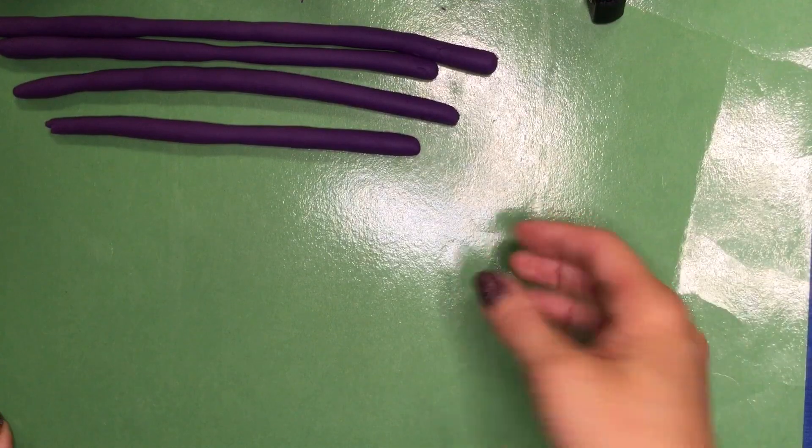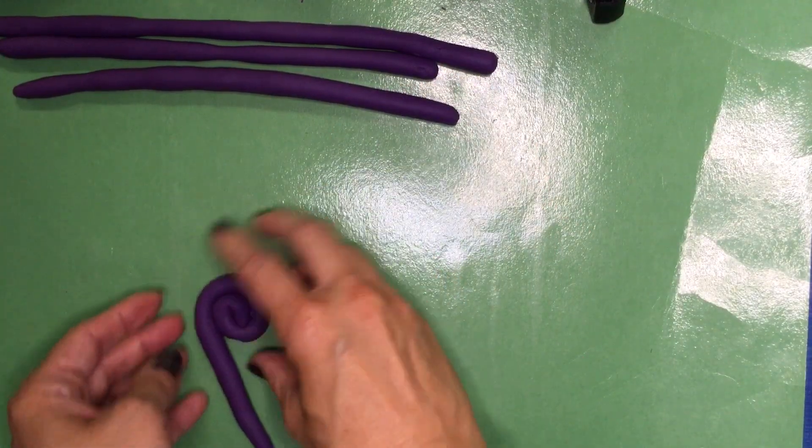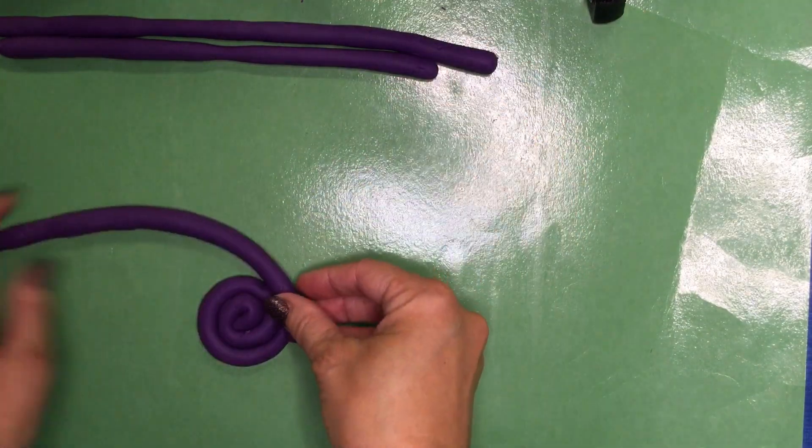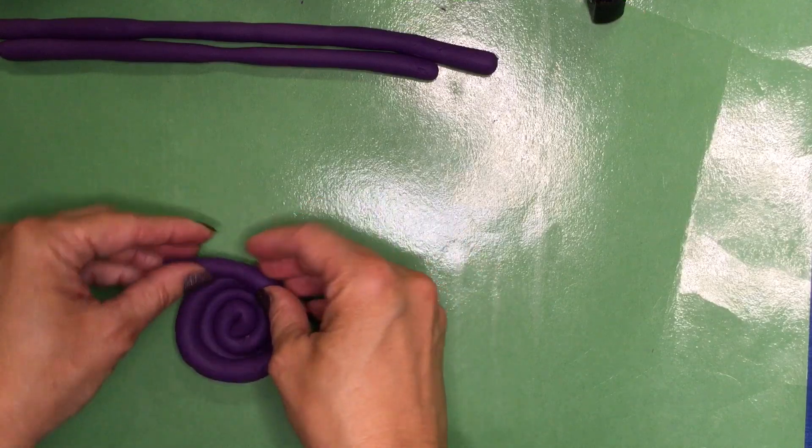Once you're done rolling out all your pieces, you can now construct things out of them by rolling up one coil tight and then adding other coils just along the edges on the top.